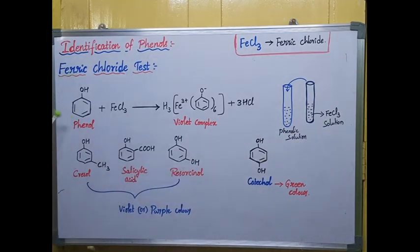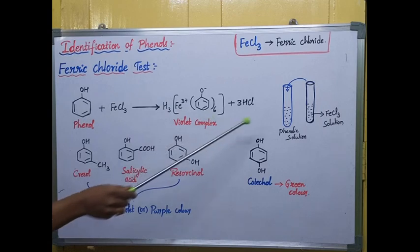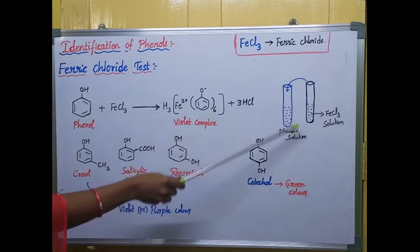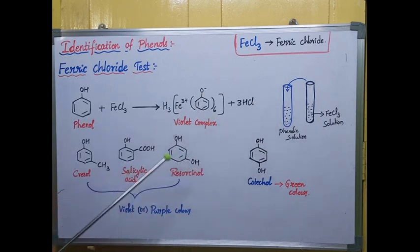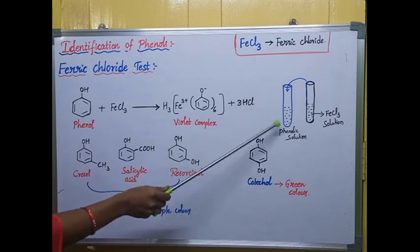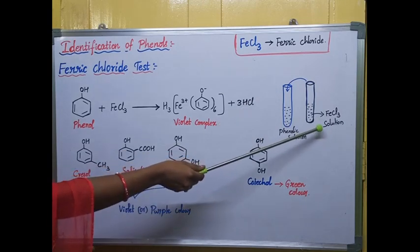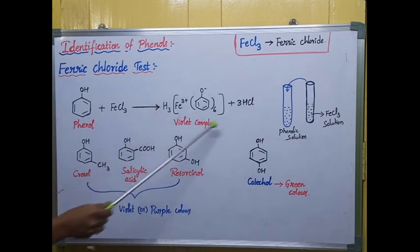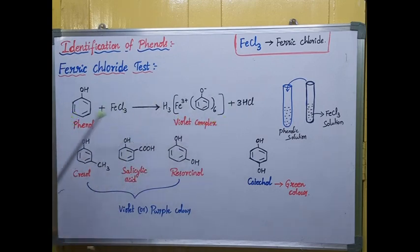The freshly prepared ferric chloride solution is added to the phenolic solution. Whatever compound is given to you, that compound should be dissolved in water — that is called the phenolic solution. To this solution, we add the freshly prepared ferric chloride solution, and you will get a complex formation. This complex is violet in color.